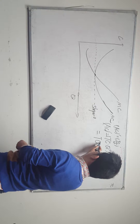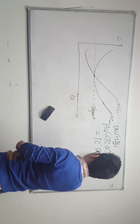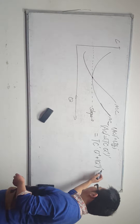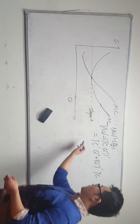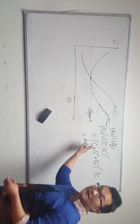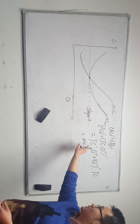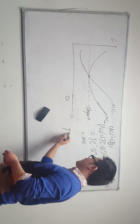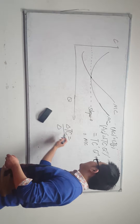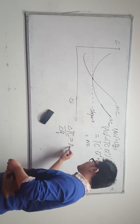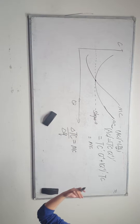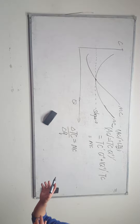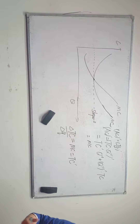We write AC as TC multiplied by q to the negative one, then apply the product rule: the derivative of TC times q⁻¹ plus q⁻¹ times the derivative of total cost. The derivative of total cost with respect to q is marginal cost by definition, because the change in total cost divided by the change in q is marginal cost — that is the definition of marginal cost and the first-order condition of total cost.